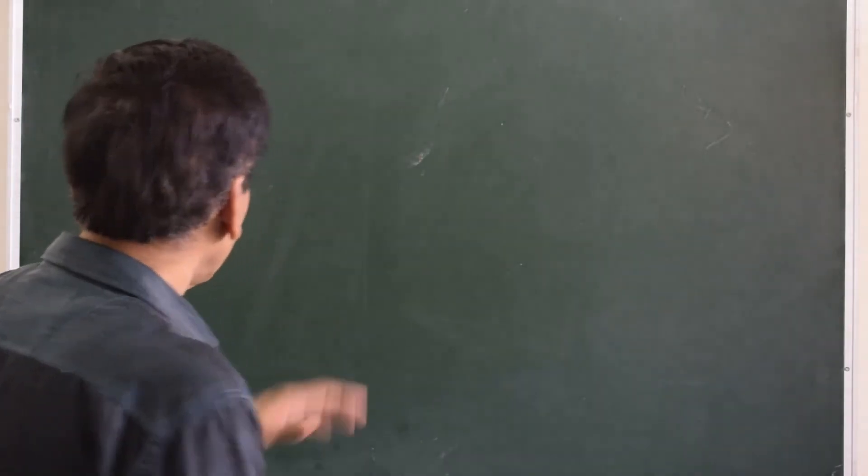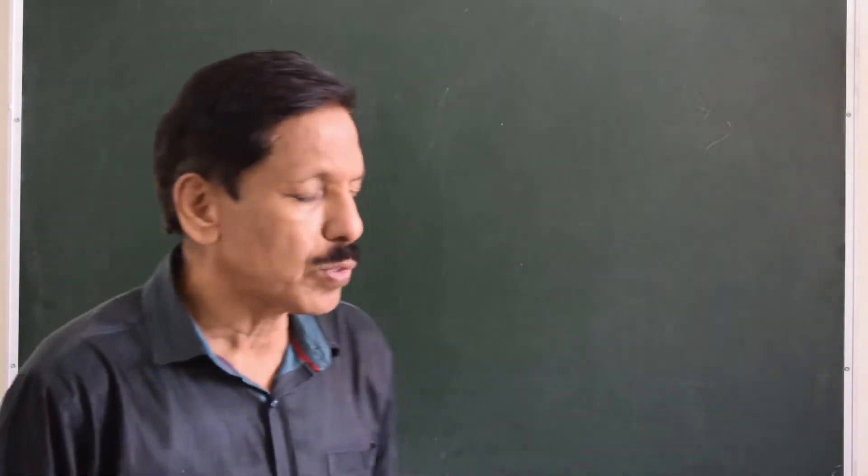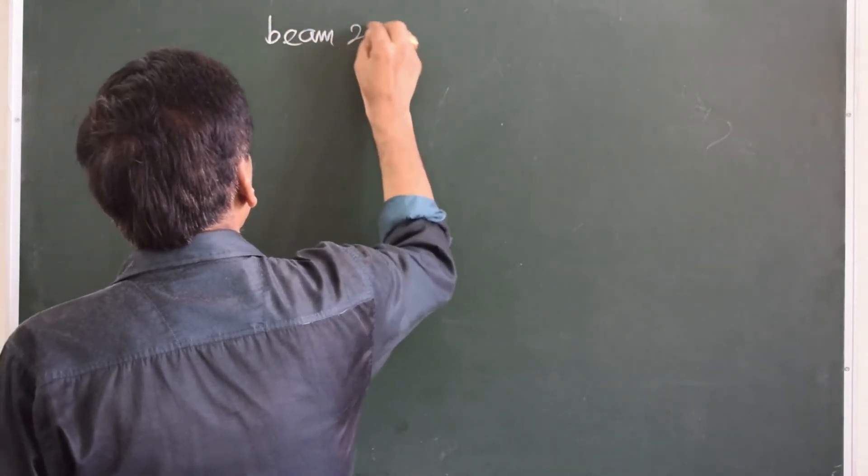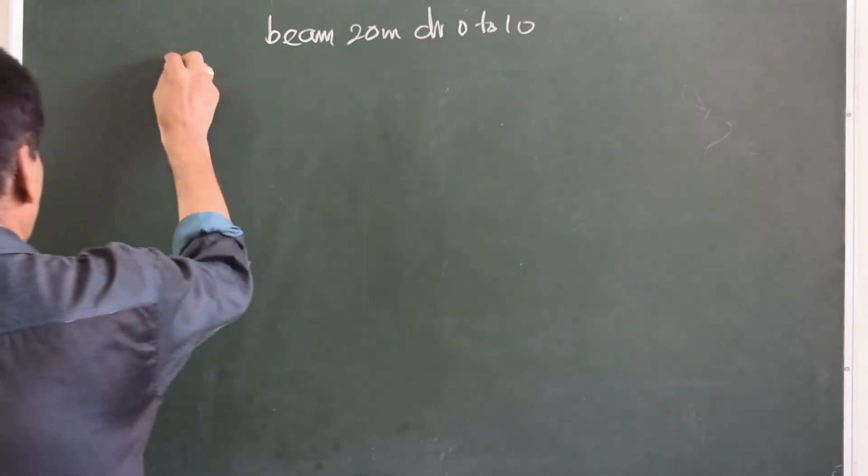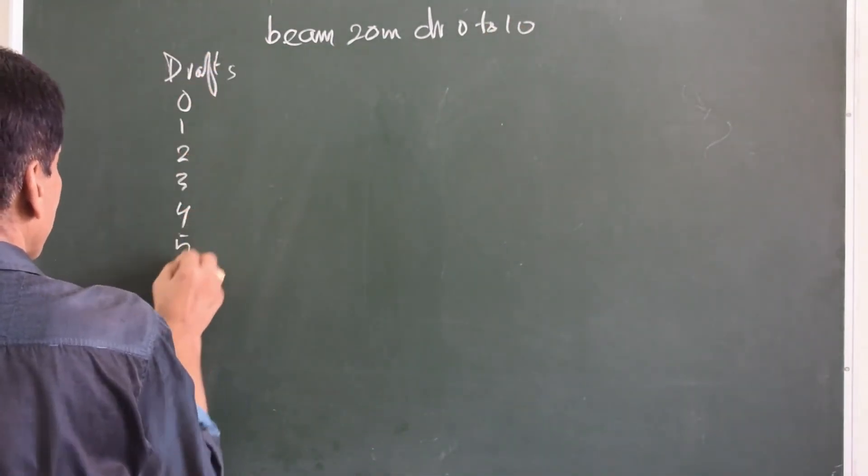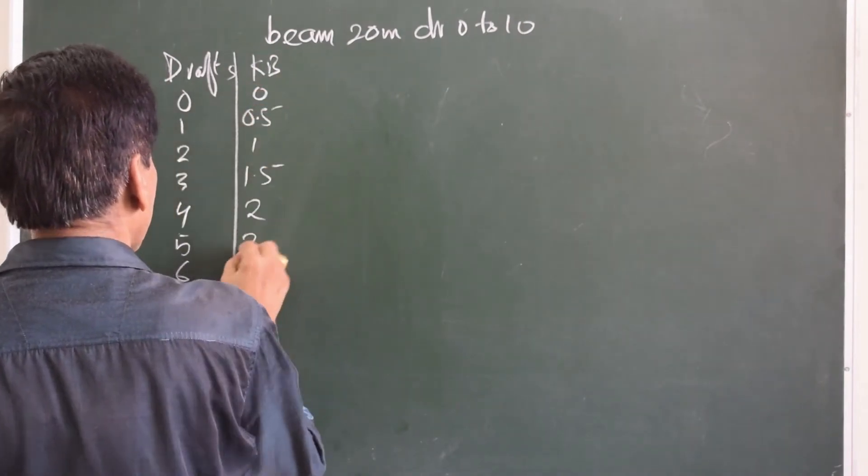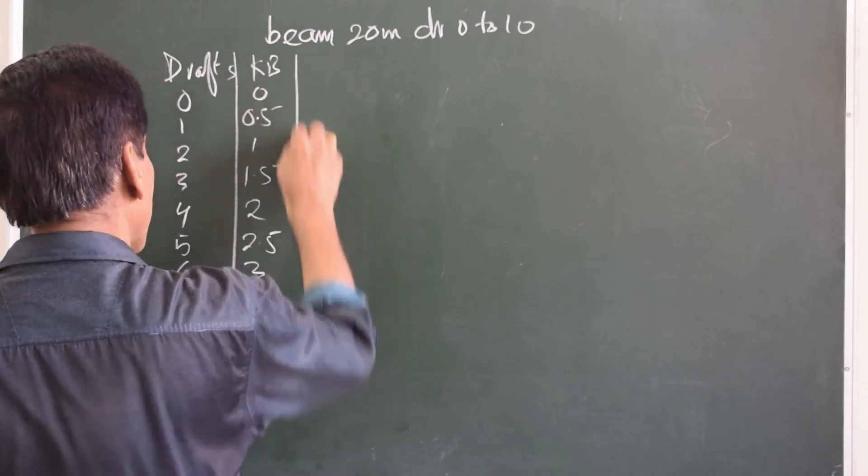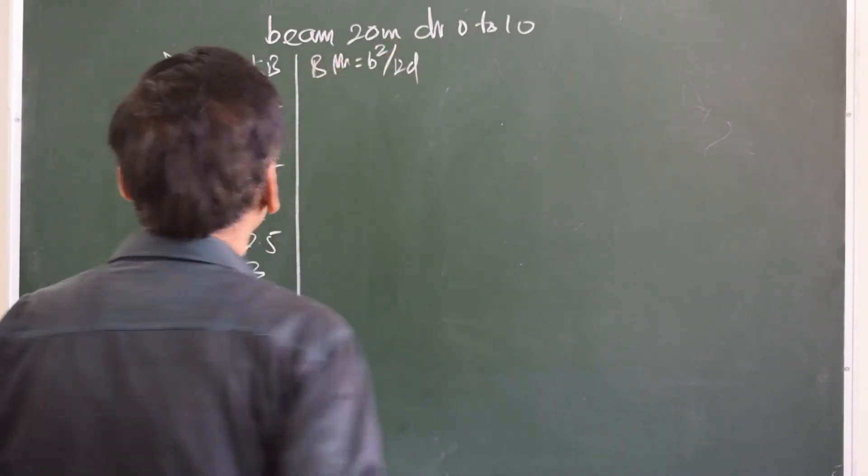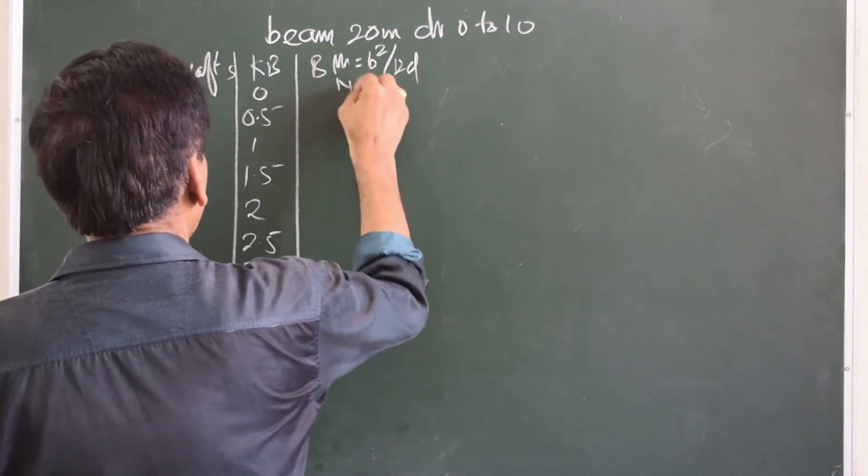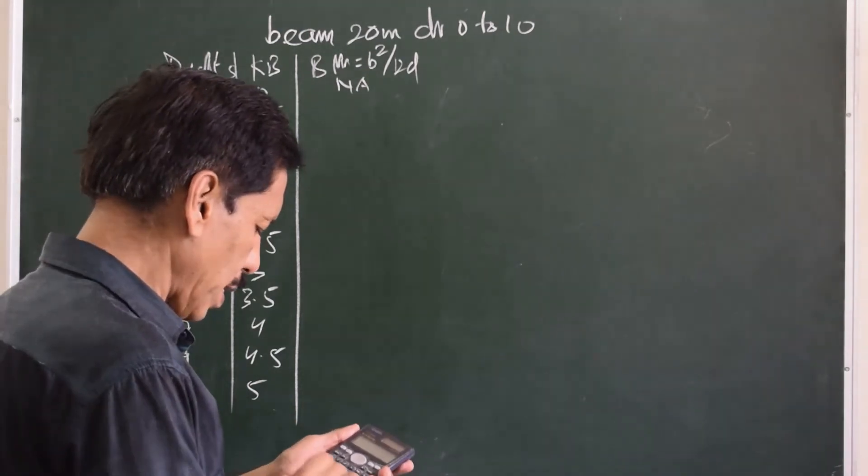Now with the help of a graph, I will try to show you what is the relationship between the draft, KB, BM of a box vessel. Let us say the ship has drafts up to 10 meters, it is a box vessel, and beam of the ship is 20 meters. The draft column goes from 0 to 10 meters. KB is draft upon 2, so for 1 meter draft KB is 0.5, for 2 meters it is 1, and so on. For 0 meters draft, BM is not applicable.